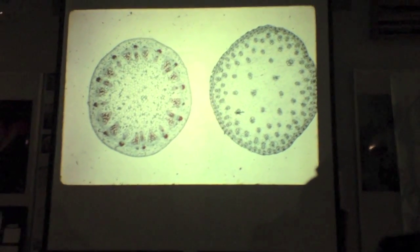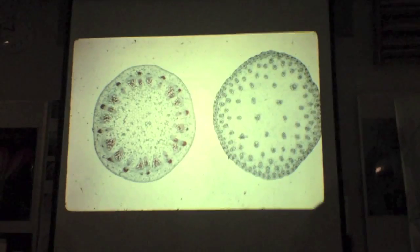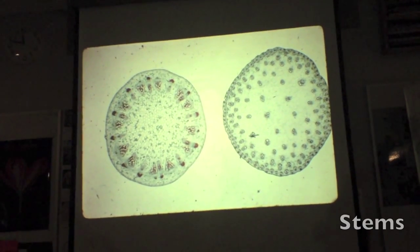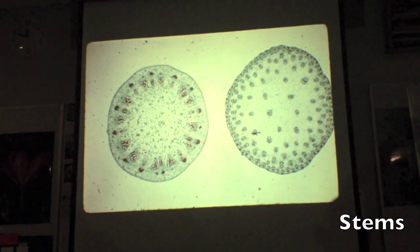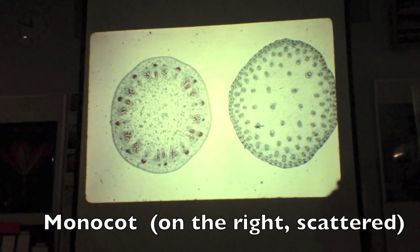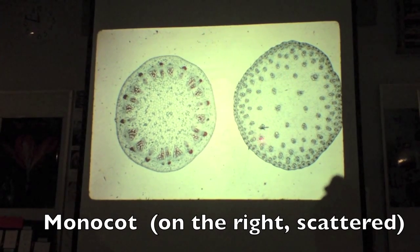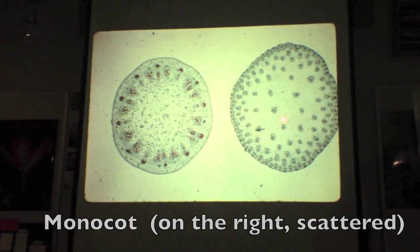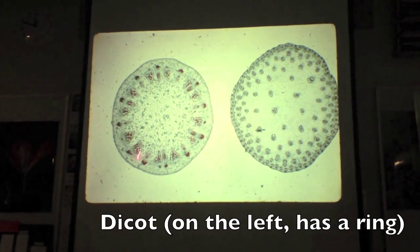Okay, so what's this — monocot or dicot? Dicot. For all of them, are these roots or stems? Stems. Which one has a ring, which one has scattered? The scattered one is monocot. Monocot has the ring? No — this one with the ring is the dicot.